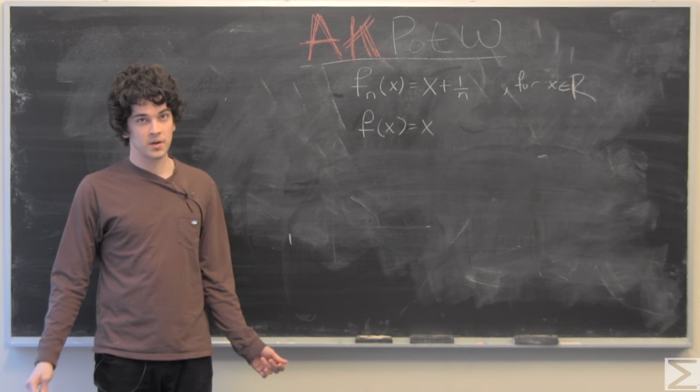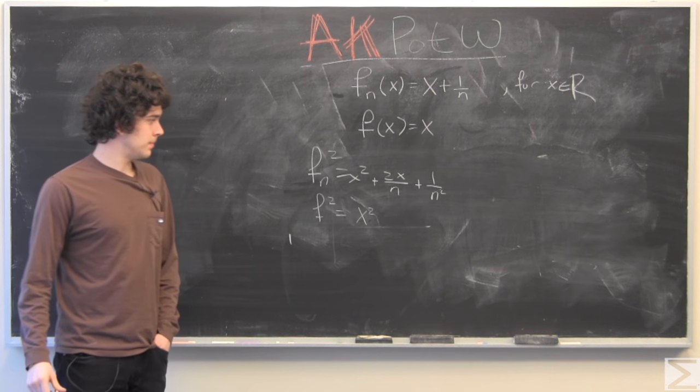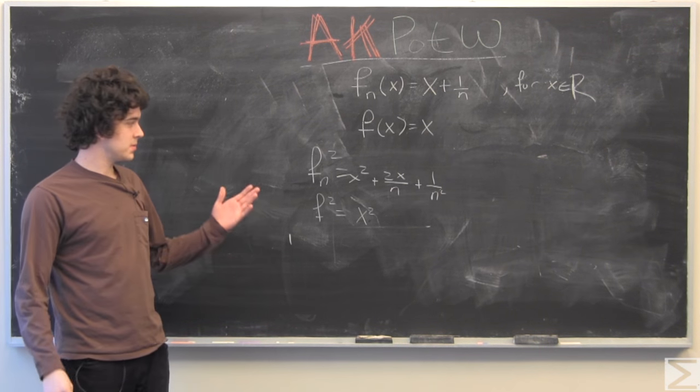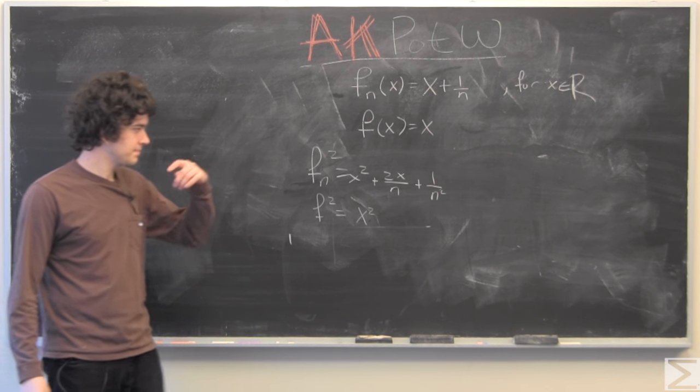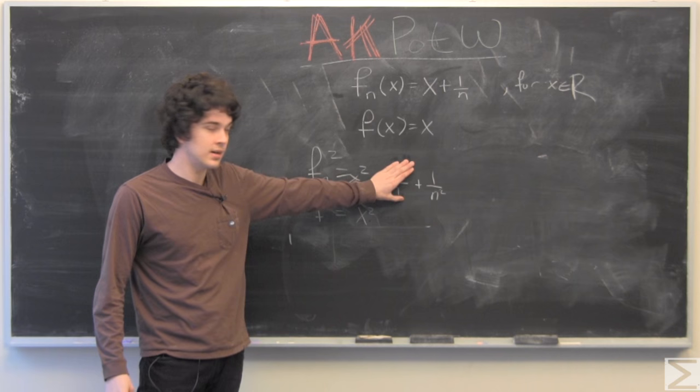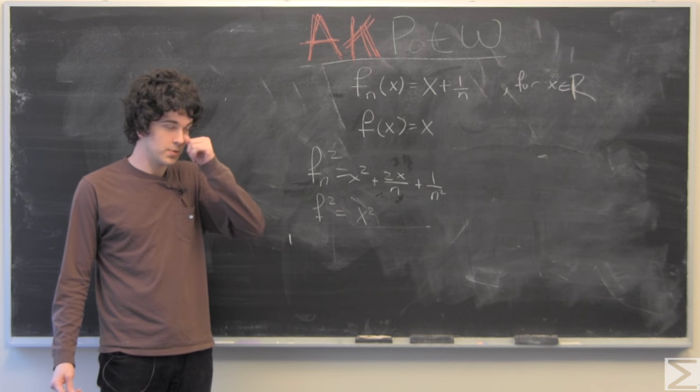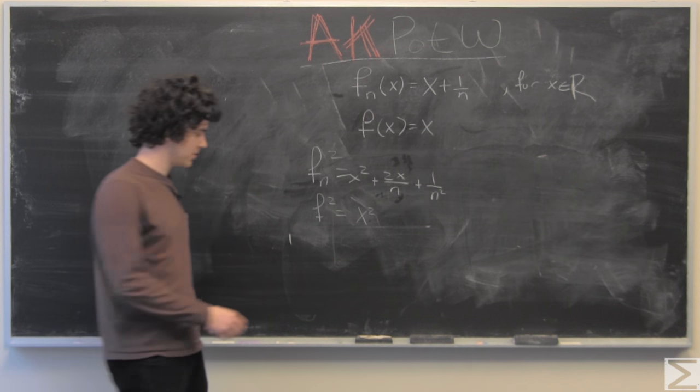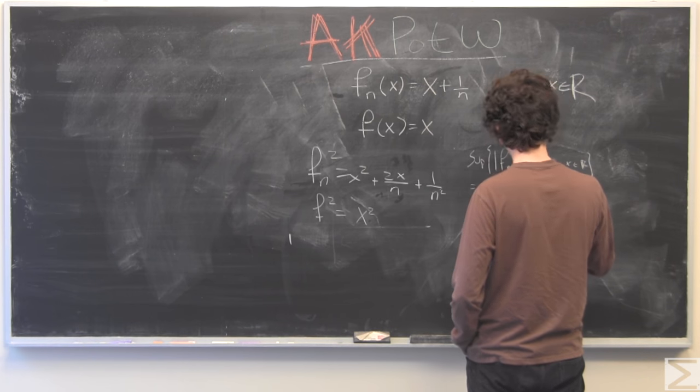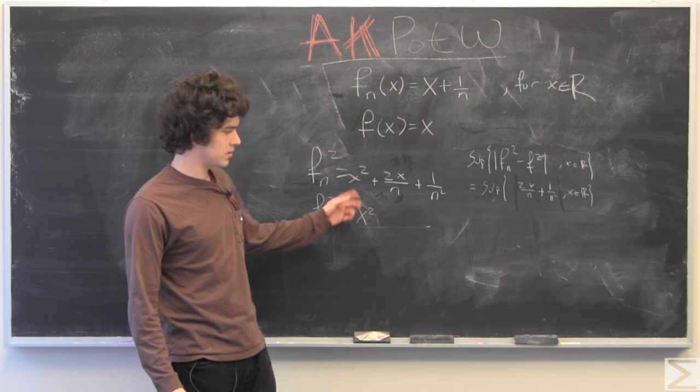And now we're going to look at f n squared and f squared. So right off the bat, the distance between the two functions when you subtract the two, it would be very similar to our last problem if it just looked like that. However, we have this cross term, so we're going to look at the supremum of the distance between the two functions. Subtracting the two, the x squareds cancel out and we're left with this.